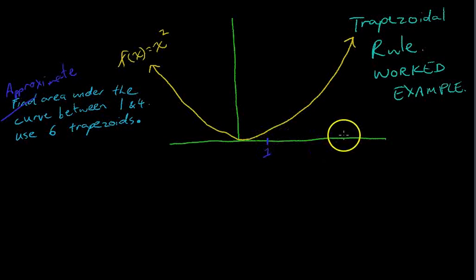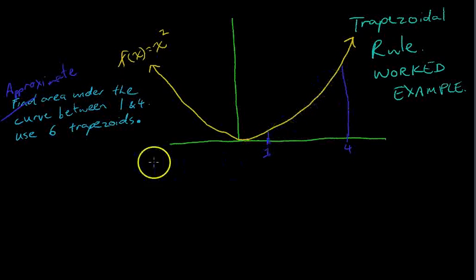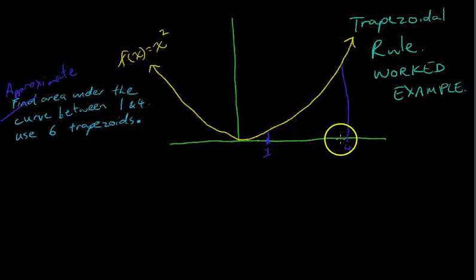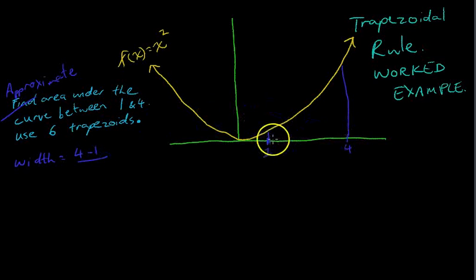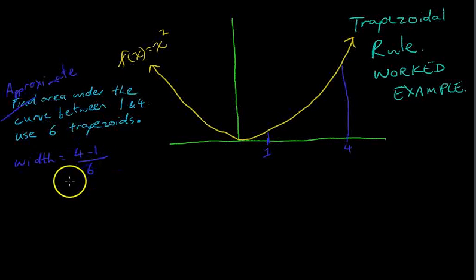We're going between 1 and 4 and we want to approximate the area under the curve between 1 and 4. We're going to use 6 trapezoids, so first of all we need to know what the width of each of those trapezoids is going to be. The width is equal to 4 minus 1 — the distance between the two endpoints — divided by the number of trapezoids, so 3 over 6. The width of each trapezoid is going to be 0.5.